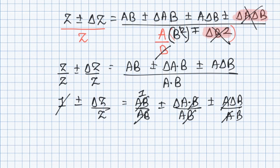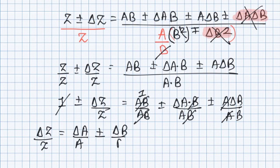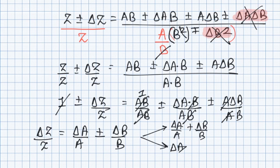Finally, we again get ΔZ/Z = Δa/a ± Δb/b. From the two possible values — Δa/a + Δb/b and Δa/a − Δb/b — we always select the maximum one. So even for division, ΔZ/Z = Δa/a + Δb/b. Hope you have got the point. Thanks!